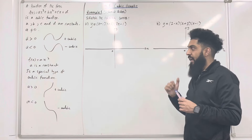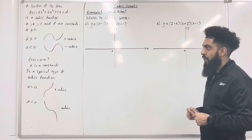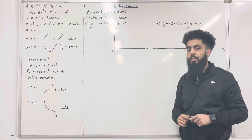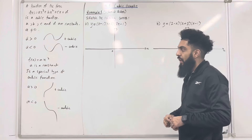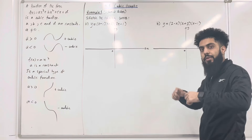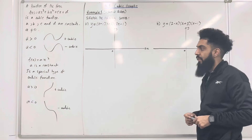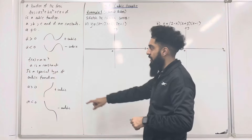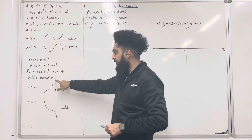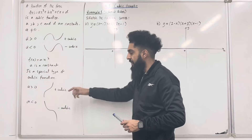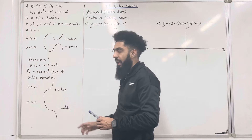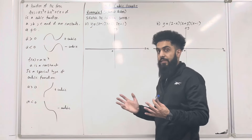f of x equals ax cubed, where a is a constant, is a special type of cubic function. Again, the shape of the cubic function depends on the coefficient of x cubed, which is a. If a is greater than 0, this is the shape — we call it a positive cubic. If a is less than 0, this is the shape — we call it a negative cubic.